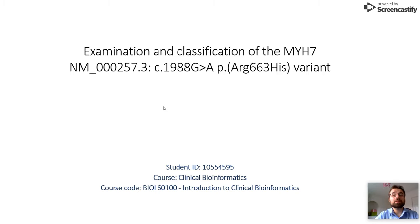Hi, I'm David and today we will be looking at the examination and classification of the MYH7 gene variant at position 1988 guanine to adenine.